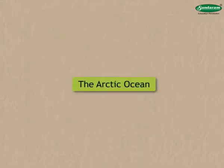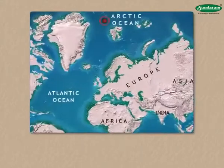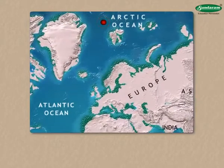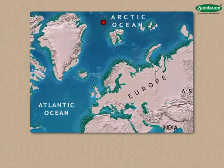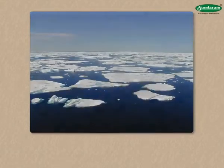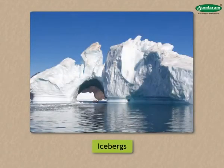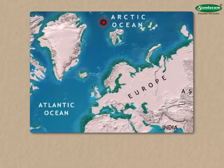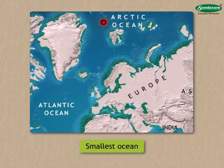The Arctic Ocean is in the area surrounding the North Pole. Most of the time, this ocean is in a frozen state. Many times, giant icebergs are seen in this ocean. This is the smallest ocean.